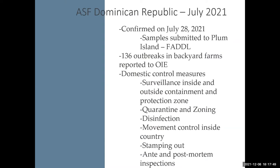In the Dominican Republic, there have been 136 reported outbreaks in backyard farms. They now run the majority of samples there themselves, with PCR capability set up with help from Plum Island Lab. They have assistance from FAO and other countries. The outbreak was confirmed in July. They've been doing surveillance, quarantine, and movement controls, but have difficulty controlling pig movement especially around the holidays when pork is a major food. Depopulation is ongoing but hampered by logistical and disposal challenges.